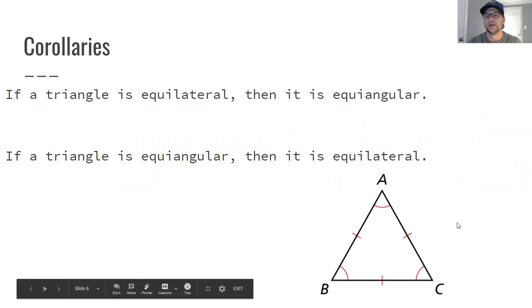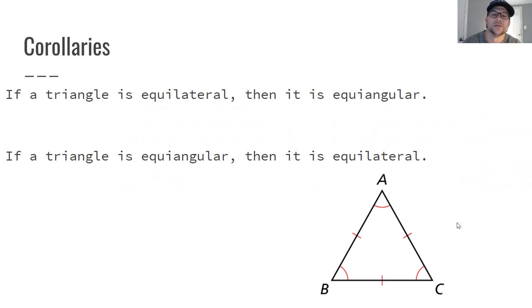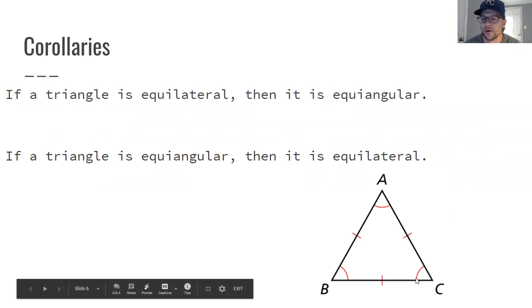Now on to equilateral. If a triangle is equilateral, it's also equiangular and vice versa. If a triangle is equiangular, it's also equilateral. That basically means if all three sides are equal, then all three angles are equal and then you can flip it into whatever order you want.